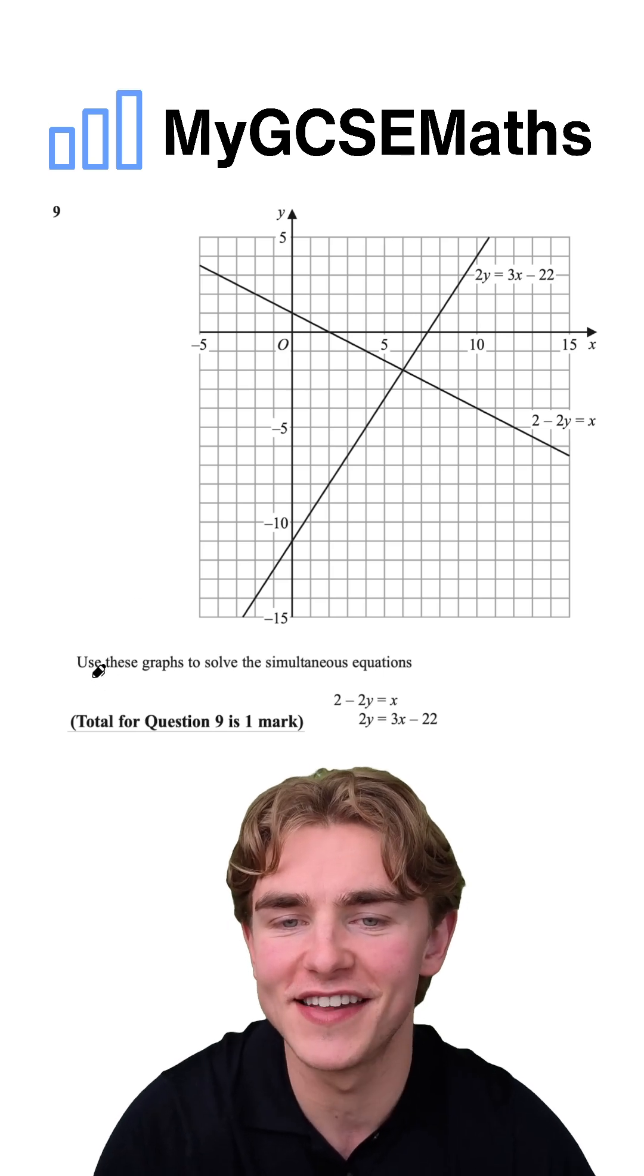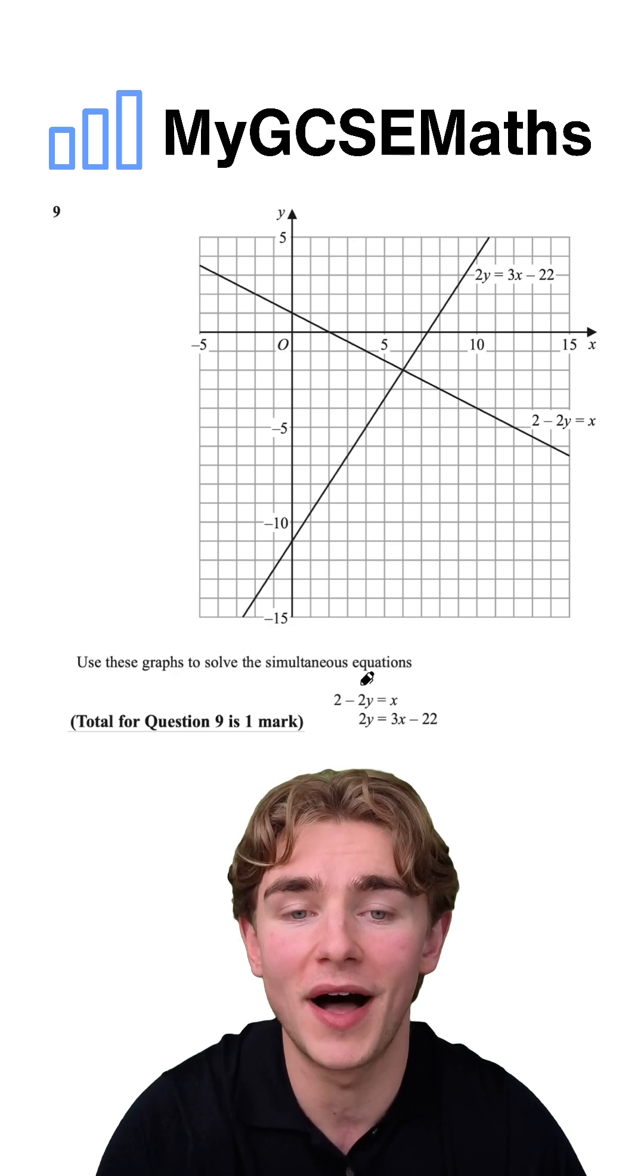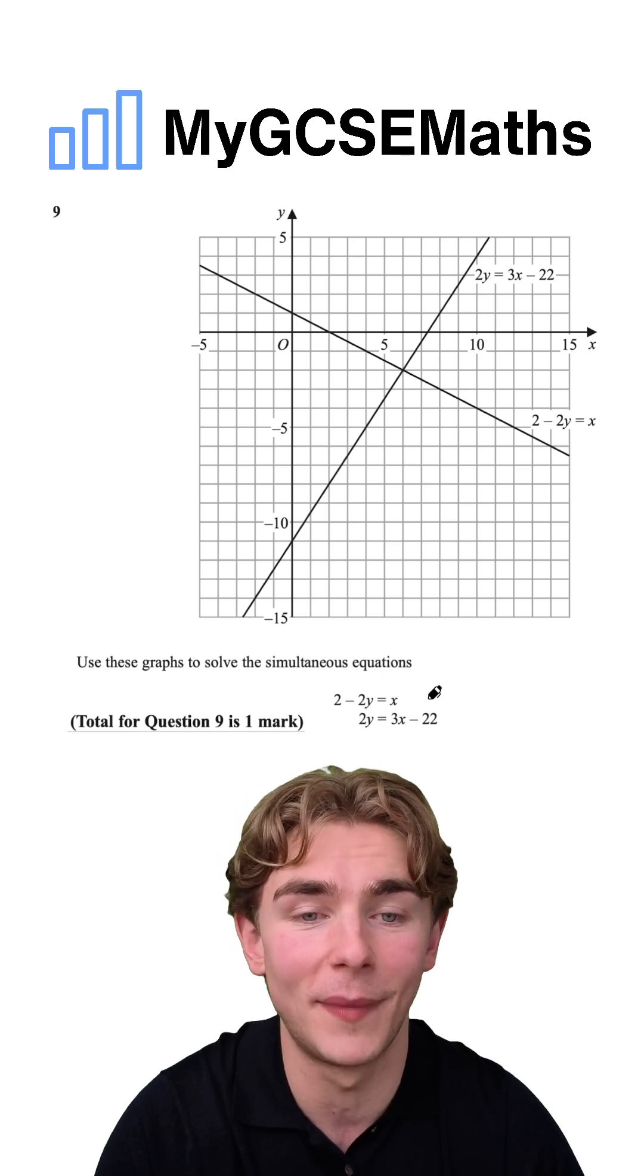Question number nine. It says use these graphs to solve the simultaneous equations 2 minus 2y equals x and 2y equals 3x minus 22.